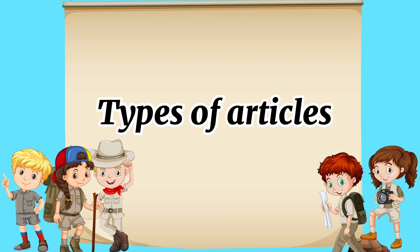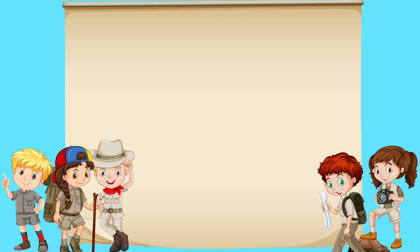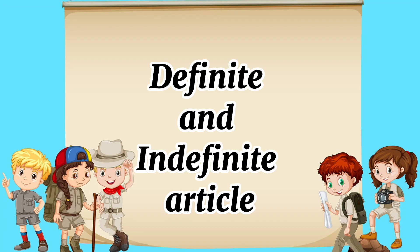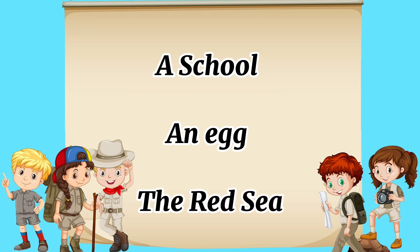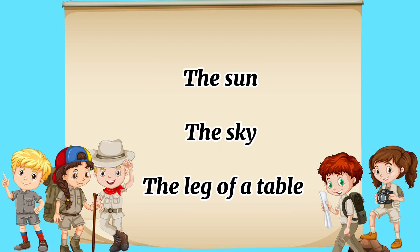Types of articles: definite and indefinite article. Consider the following examples: a school, an egg, the Red Sea, the sun, the sky, the leg of a table.